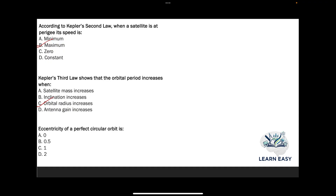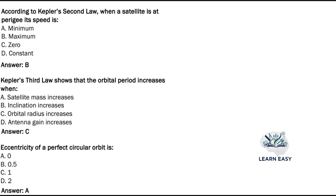Next question: the eccentricity of a perfect circular orbit is — option A: 0; option B: 0.5; option C: 1; option D: 2. For a perfect circular orbit, the eccentricity will be 0, that is option A.